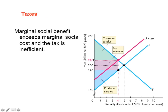The tax revenue is $20 per unit sold, multiplied by the 4,000 units sold in the market. This ends up being the height multiplied by the length — the area of a rectangle representing the tax revenue. In this case it is $20 multiplied by 4,000 MP3 players, giving the total tax revenue.